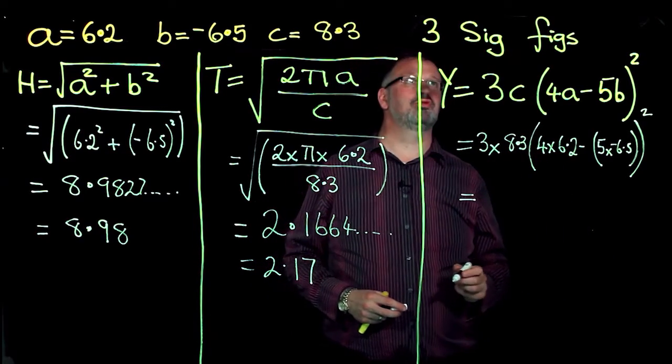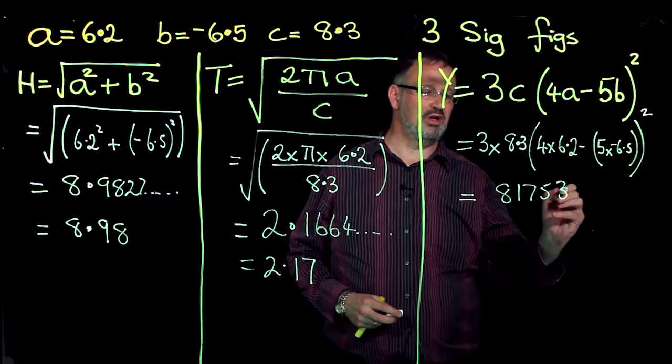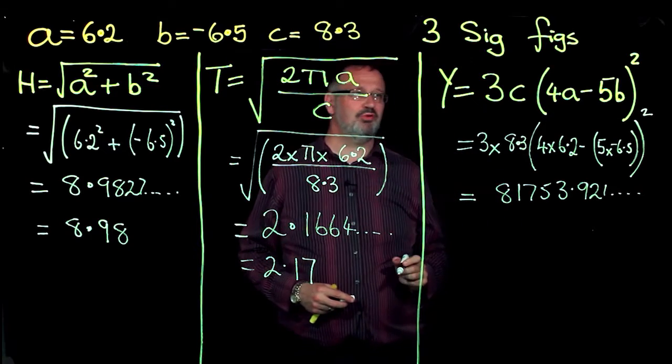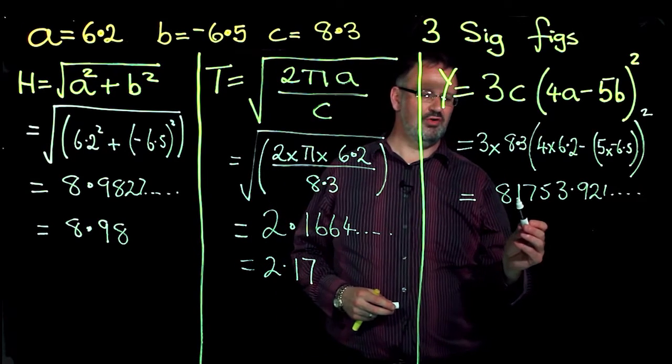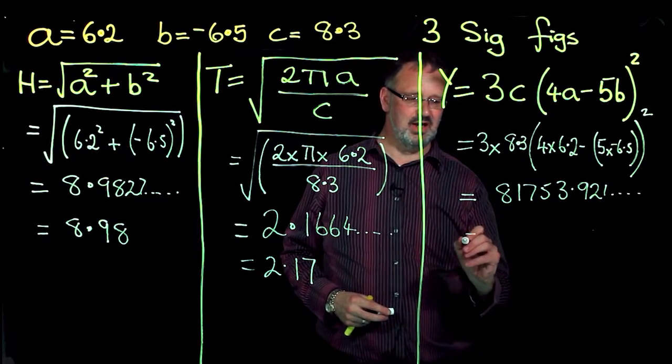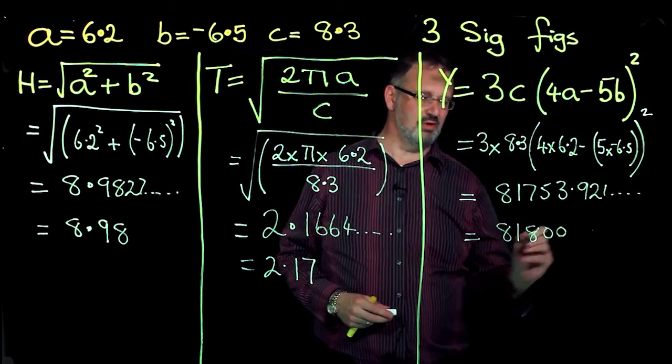When I now push the equal sign, I get 81753.921. And to three significant figures, 1, 2, 3, consider the fourth, which is a 5, so that rounds up the 7 to an 8, 81,800.